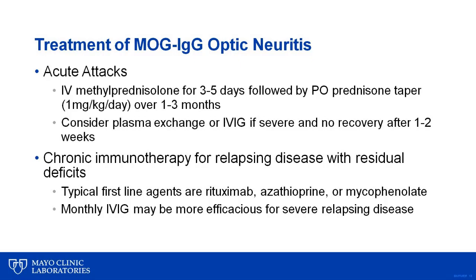In patients with relapsing disease, the first-line treatment is typically rituximab, azathioprine, or mycophenolate. Monthly IVIG may be efficacious for severe relapsing disease, but future randomized clinical trials will be required to confirm the best treatment.